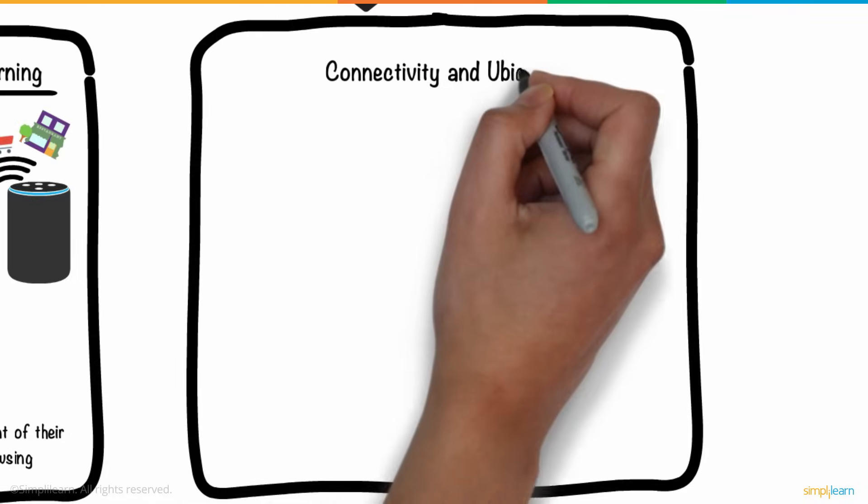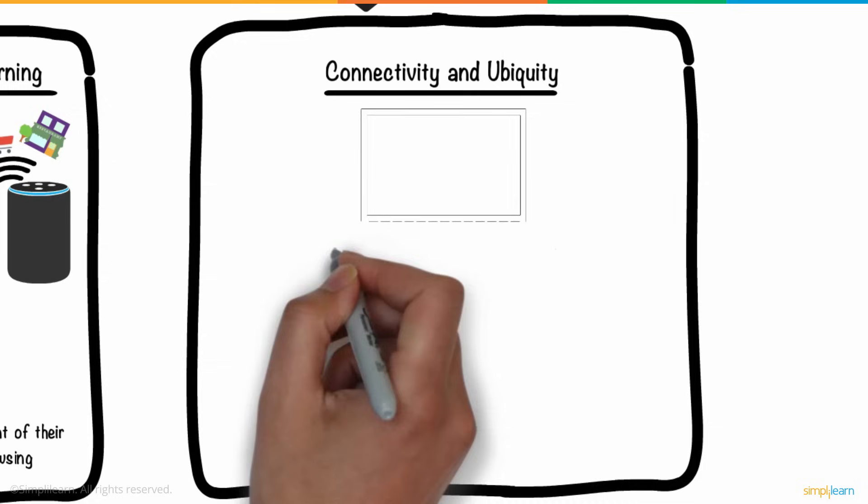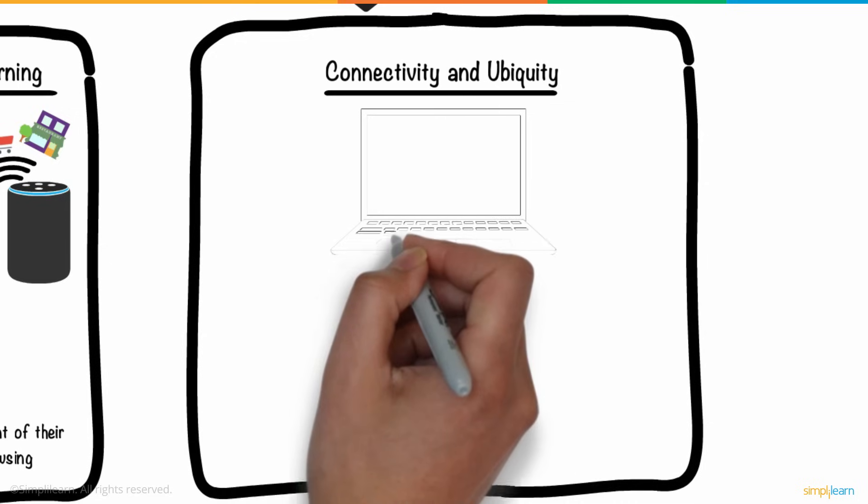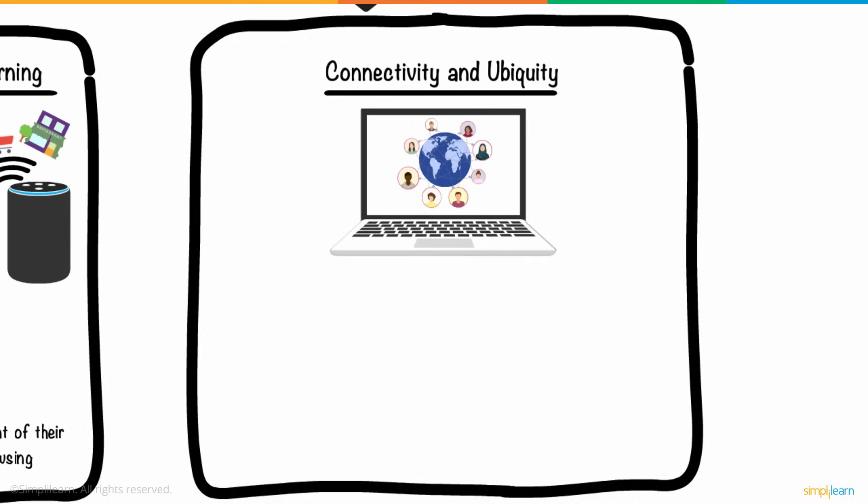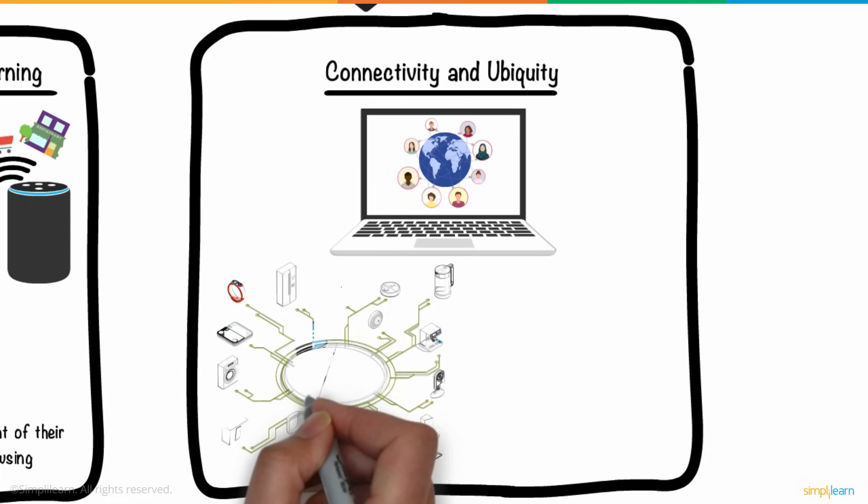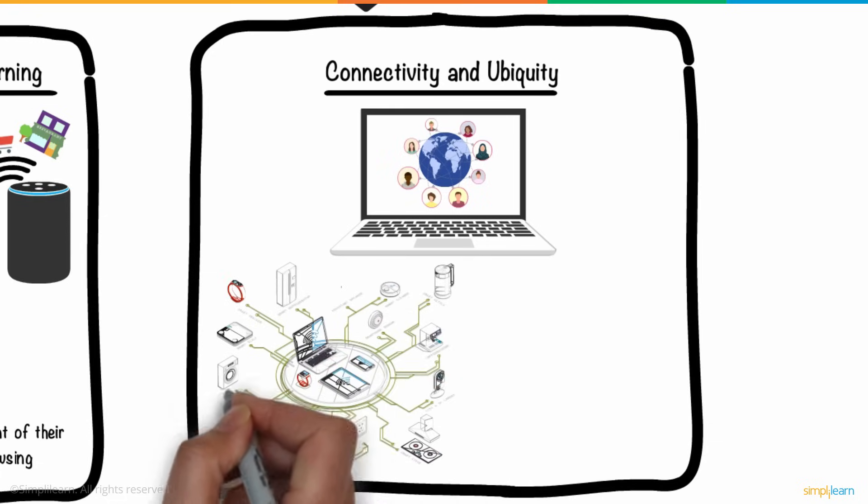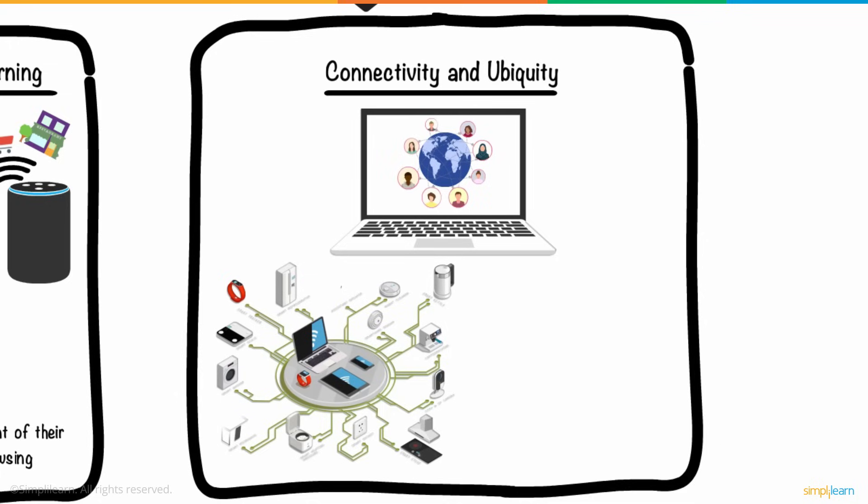Fourth is connectivity and ubiquity. In Web 3.0, the internet will be accessible to everyone anywhere, at any time. Because IoT, Internet of Things technology, will launch in several new smart devices. These internet-connected devices will no longer be limited to PCs and smartphones, as they were in Web 2.0.